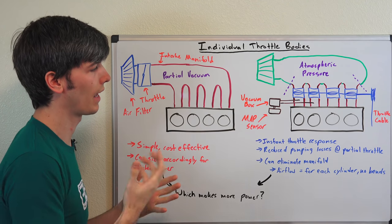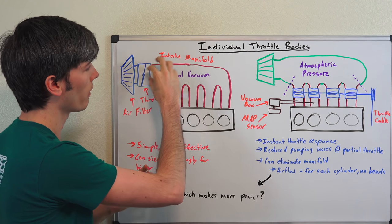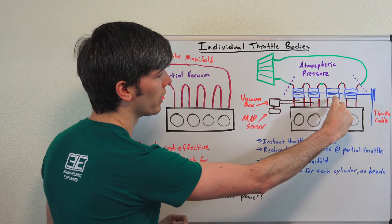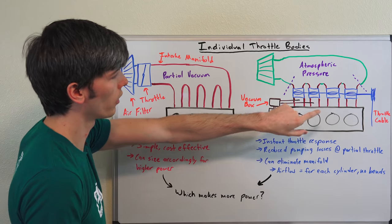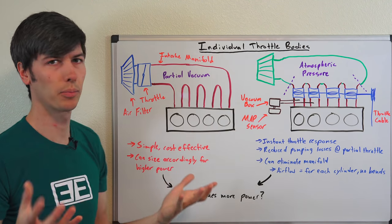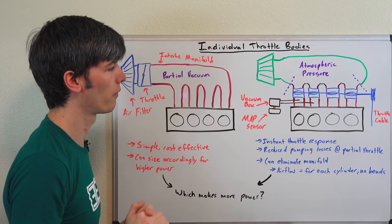You're also going to have reduced pumping losses at partial throttle because instead of drawing a vacuum through this giant area right here, instead you're only going to be filling up this volume in each of these intake runners before you get to that throttle body. So you're going to have a very small vacuum in comparison, less pumping losses. So this can be more efficient at partial throttle.